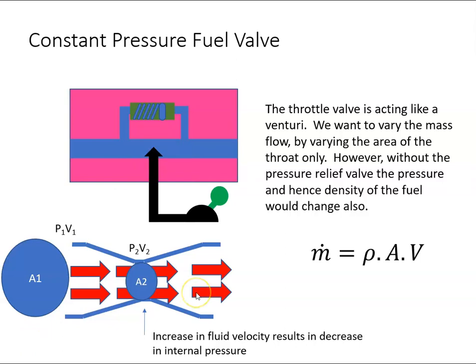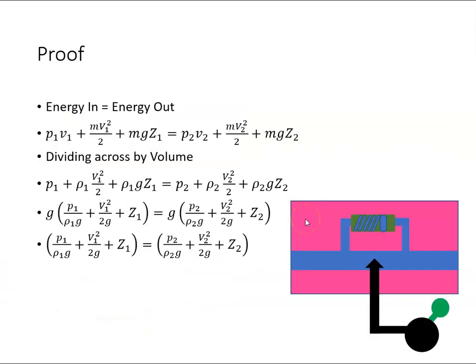For the next couple of minutes, I'm just going to prove that formula. The whole premise is that the energy at this point will be the same as the energy here, so energy in equals energy out. Energy in is the pressure energy p₁v₁, the kinetic energy mv₁²/2, and the potential energy mgz₁, and that should be the same at station two.